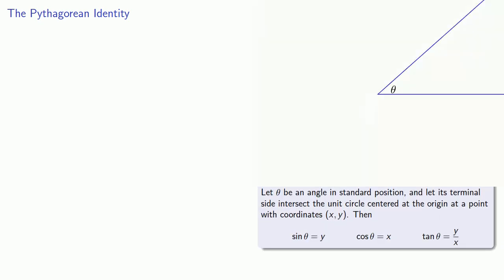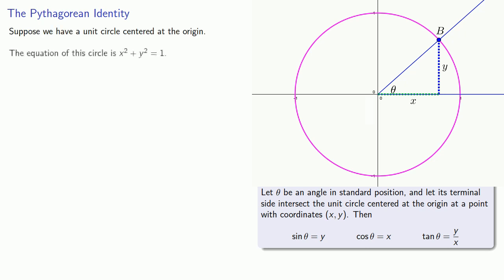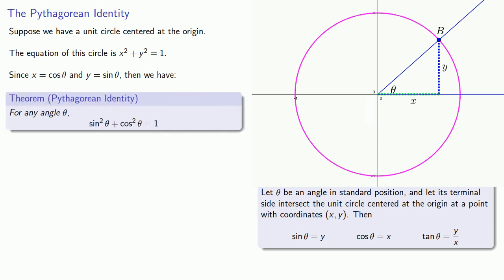Here's a quick recap of trigonometry on the unit circle. If theta is an angle in standard position, its terminal side will intersect the unit circle at a point where the y-coordinate is sine, the x-coordinate is cosine, and the tangent is y over x. The equation of the unit circle is x squared plus y squared equals 1. Since x equals cosine theta and y equals sine theta, and equals means replaceable, we can substitute to get the Pythagorean identity: for any angle theta, sine squared theta plus cosine squared theta equals 1. Because this is always true regardless of the angle theta, this is an identity — an equation you can always use in any problem.